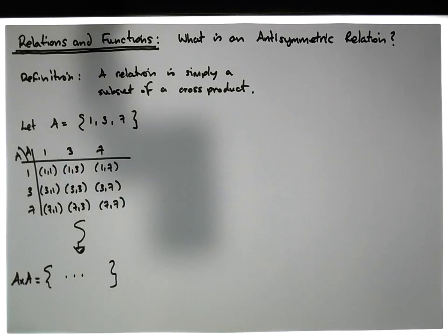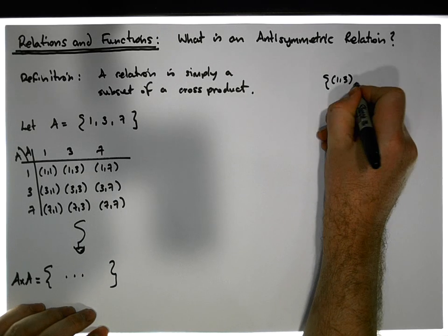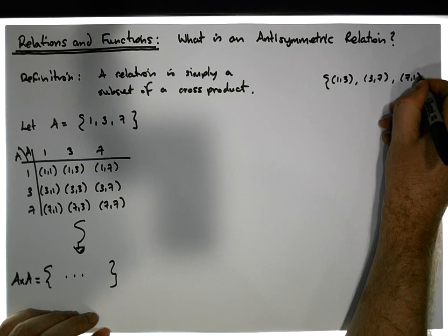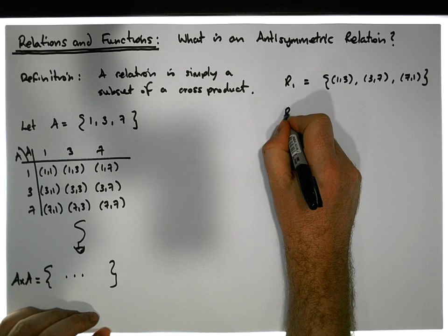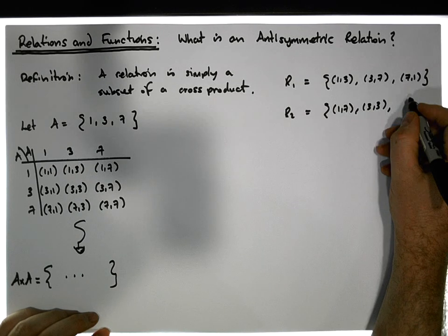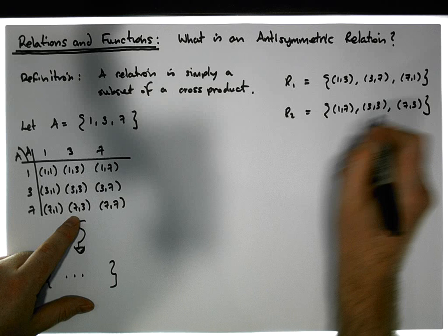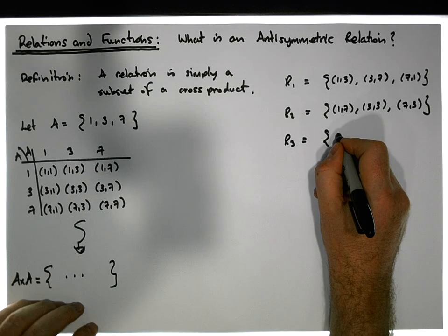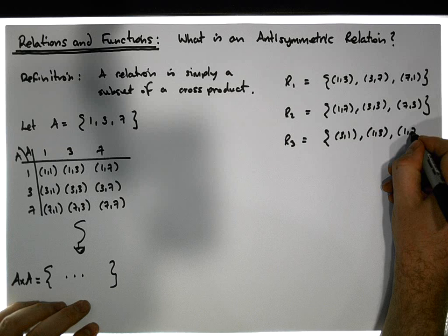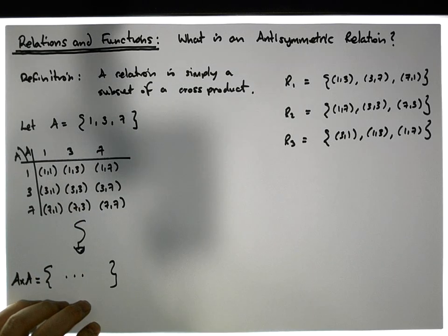We can choose ordered pairs from that set to form relations. Let's say OR1 = {(1,3), (3,7), (7,1)}. Let OR2 = {(1,7), (3,3), (7,3)}. And let OR3 = {(3,1), (1,3), (1,7)}. These are all relations because they are all subsets of the cross product A cross A.